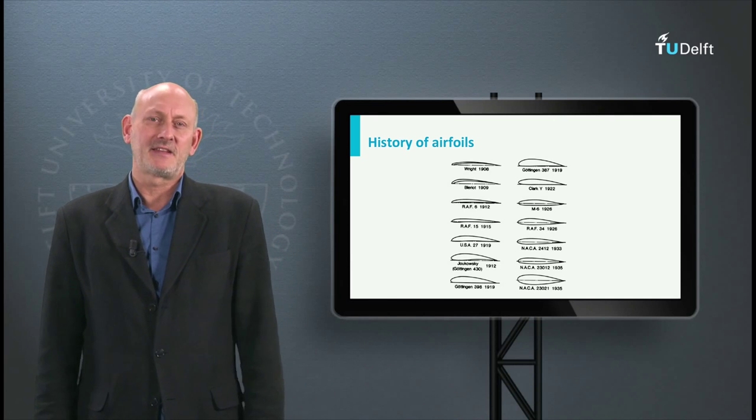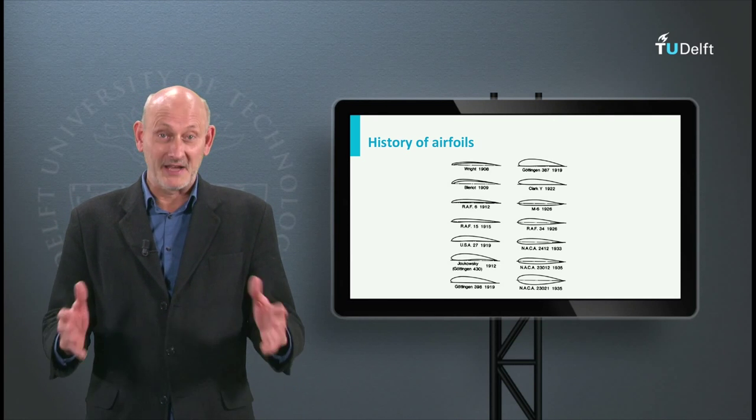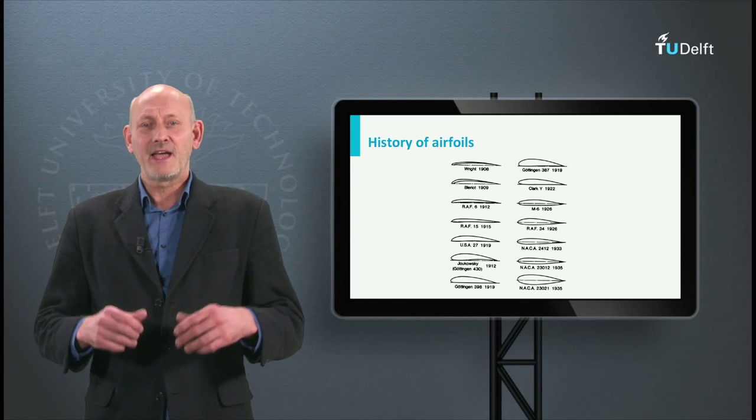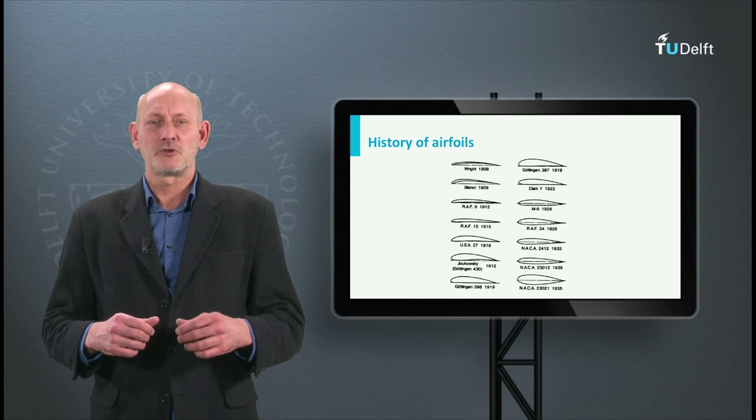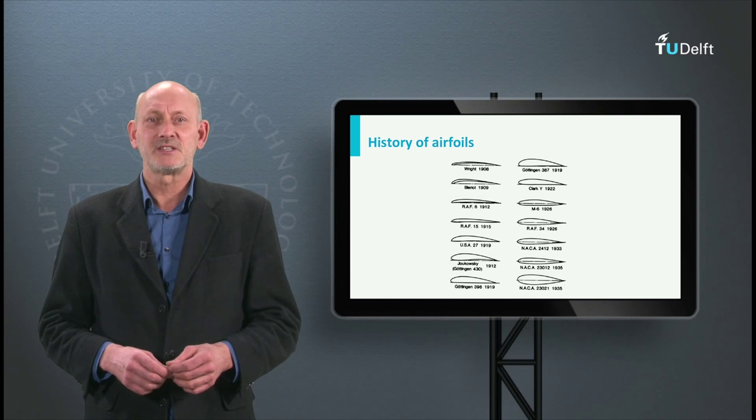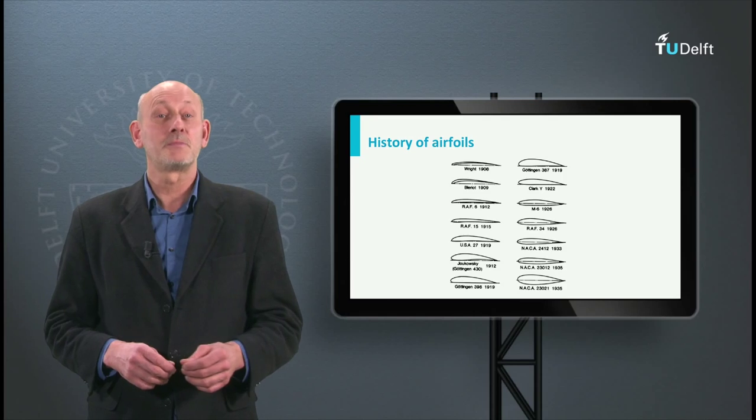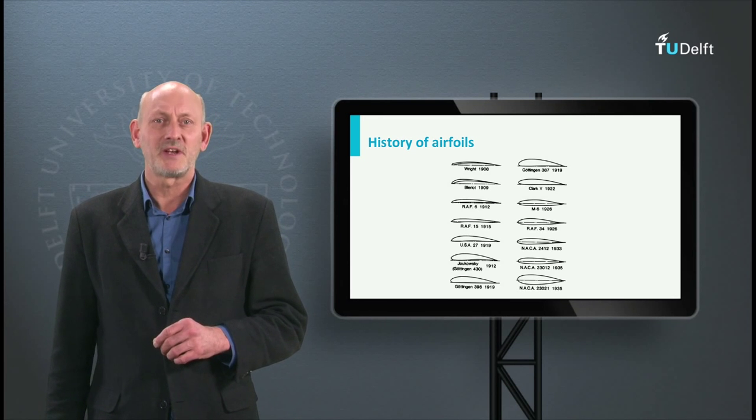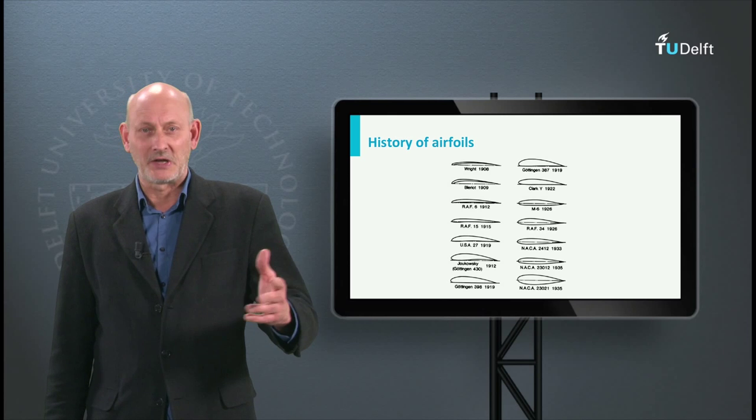Since the early days of flight there has been a constant quest for the right airfoil. First it was trial and error, but with the aid of wind tunnels later on the research became more coherent. This picture is quite popular since it shows a number of developments in the beginning of the 20th century. The Göttingen research has already been mentioned when we talked about Prandtl and his work.